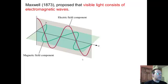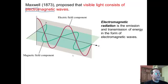Maxwell, 1873, proposed that visible light consists of what we now call electromagnetic waves. Electromagnetic waves, based on their title, have two parts to them. They have an electric component and a magnetic component. Notice that these components, on an x, y, and z axis, are perpendicular to each other, or they are at 90 degrees.